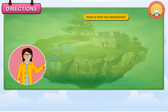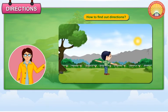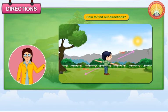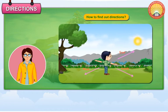How to find out directions? Stand in the morning facing the rising sun. Stretch your both arms as shown in the picture. Your face is towards the east. Your back is towards the west. Your right arm points to the south. Your left arm points to the north.